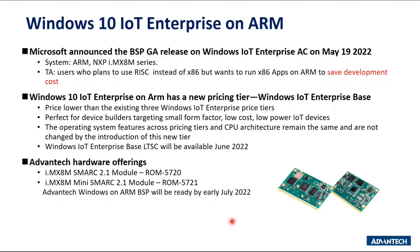Microsoft has released Windows 10 IoT Enterprise on ARM, for ARM NSP series. It is for users who plan to use RISC instead of X86 and want to run X86 on ARM to save development cost. It has a new pricing tier called Windows IoT Enterprise Base, which is priced lower than the existing three Windows IoT Enterprise tiers. It is perfect for device builders targeting small form factor, low cost, and low-power IoT devices. The OS features across pricing tiers and CPU architecture remain the same.